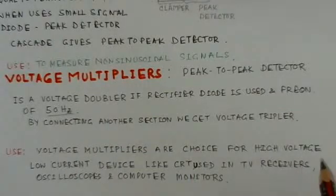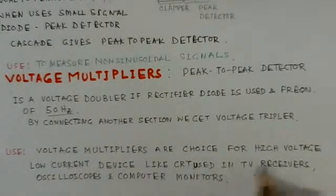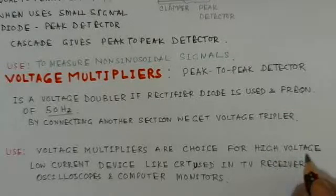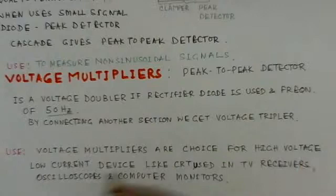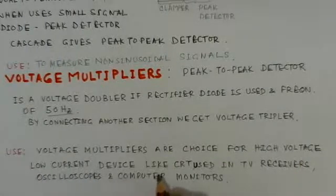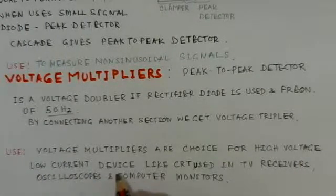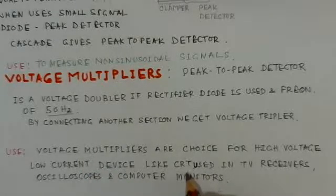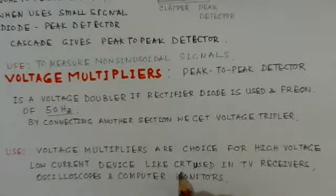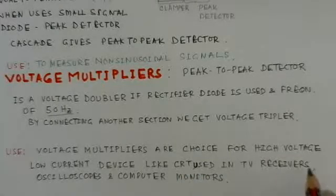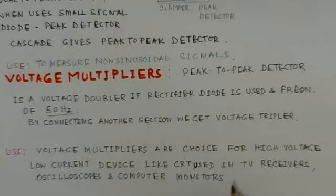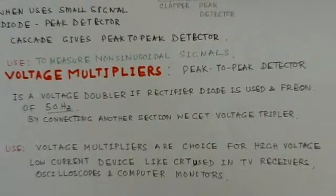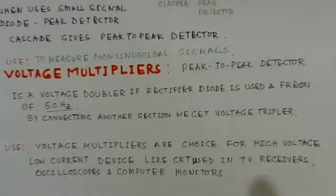But the applications what these circuits find is voltage multiplier circuits for high voltage and low current device. That means you can generate high voltages by the multiplications where only requirement is of low current, it is not of high current. Then only you can use this method, and such requirements are like cathode ray tubes used in television receivers, oscilloscopes, and computer monitors. The CRTs only need high voltage and low currents, so there you can use these voltage multipliers.